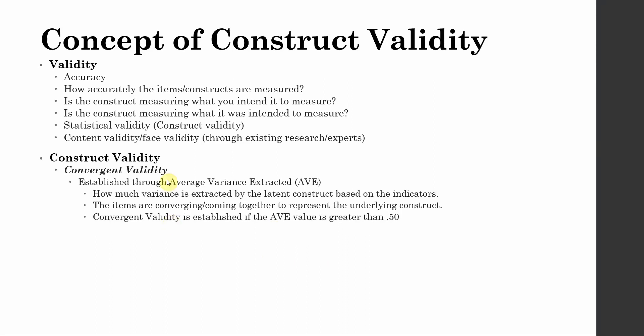For now, the takeaway from these slides is that construct validity is established using convergent validity, and there is another form of validity as well. To establish convergent validity, you need AVE. Smart PLS will give you that value calculated. If the AVE value is greater than 0.50, this means that yes, your items are converging, coming together to represent the underlying construct, and there is convergent validity.